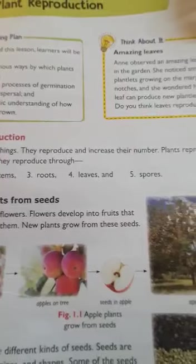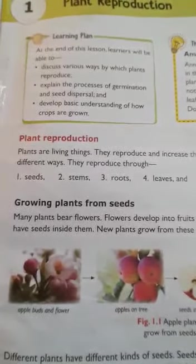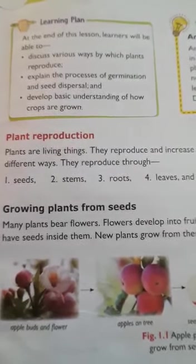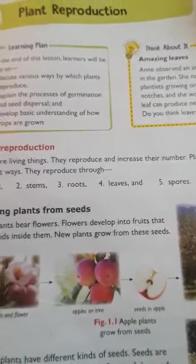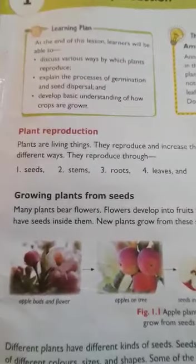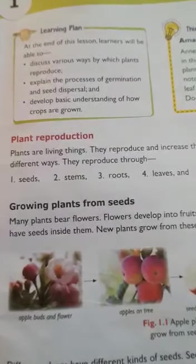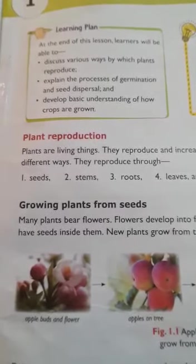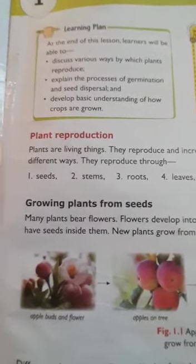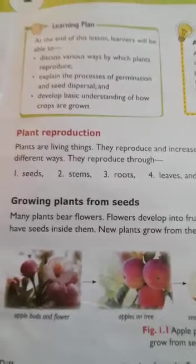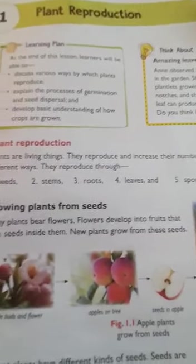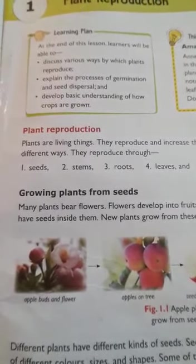Plants are living things. They reproduce and increase their number. Plants reproduce in different ways — through seeds, stems, roots, leaves, and spores. As you have studied, a plant has a root system and a shoot system. Below the surface of the earth is the root system, and above it is the shoot system, which includes the stem, leaves, branches, fruits, and flowers.